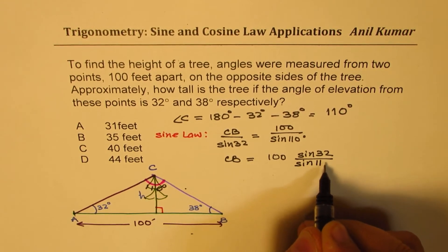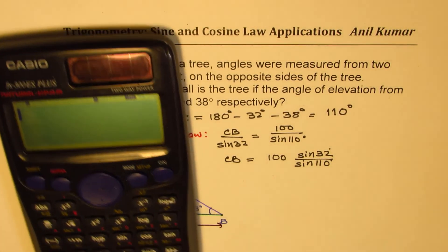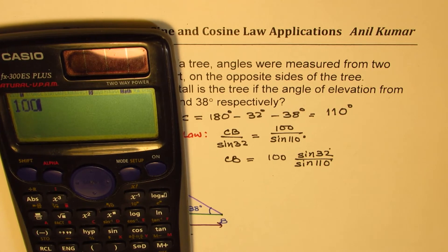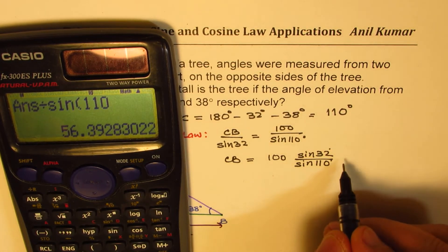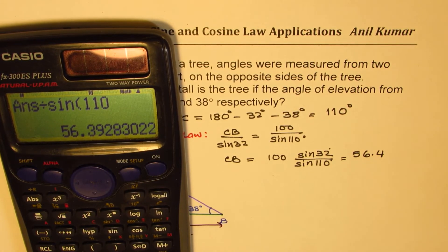We know CB now. Once we find CB, then it is easy. We can use tan ratio. So we have 100 times sine of 32, we'll divide this by sine of 110, we get 56.4. So we know this side is 56.4 feet.